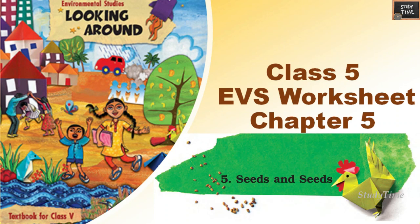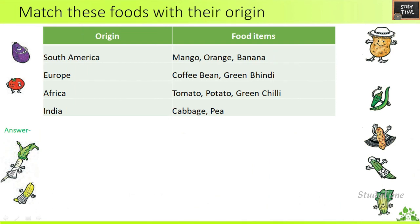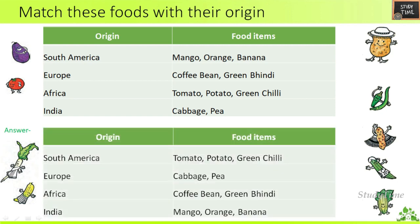Hello everyone, welcome to Study Done. In this video we are going to see Class 5 EVS Chapter 5 worksheet — Seeds and Seeds. Match these foods with their origin. Food items and origins are given; you are going to match with the correct one. If you want to solve separately, just pause the video, write down the answer in your notebook, then play the video and check the answer.